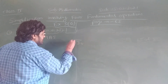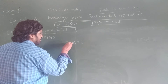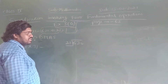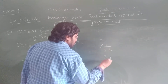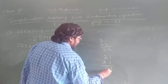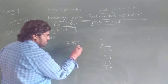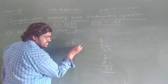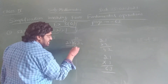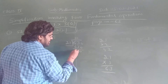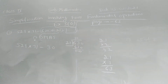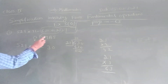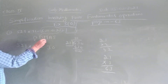Divide 630 by 21. 21 times 1 is 21. 21 times 2 is 42. 21 times 3 is 63. 21 times 30 is 630. So we got the answer 30. Now afterwards, what do we have to do children? After division, M — multiplication — is there. Is there a multiplication? Yes. 529 and 71 are there for multiplication.